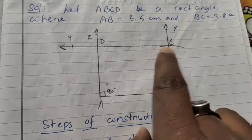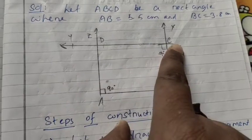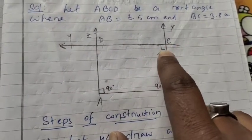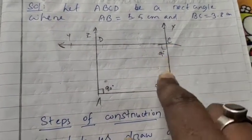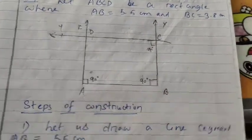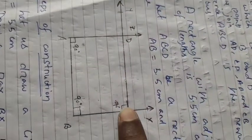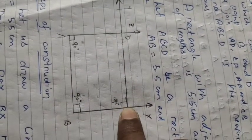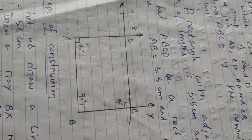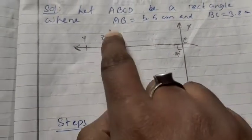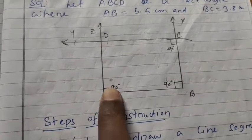Since all angles are 90 degrees, any ray at point C will make a 90 degree angle with BC. At the point C, draw a ray CY forming a 90 degree angle with BC at the point C.